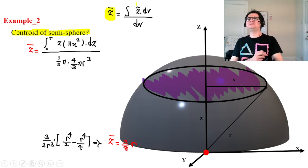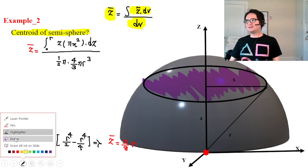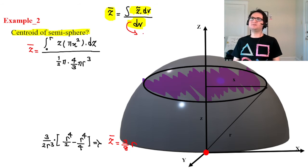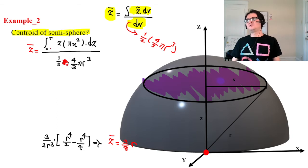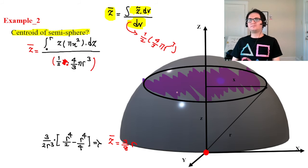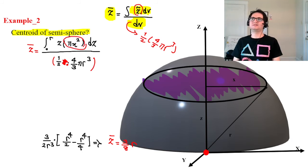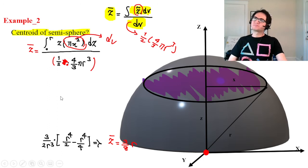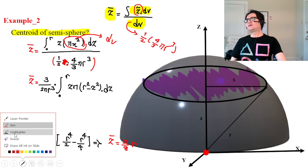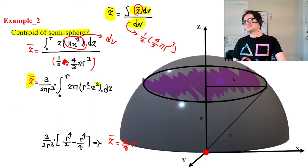In 3D we use z-bar equals the integral of z dV over dV. The volume of a semi-sphere is one-half of (4/3)pi r cubed. At the numerator, we integrate from 0 to r with z times dV, where dV equals pi x squared dz.